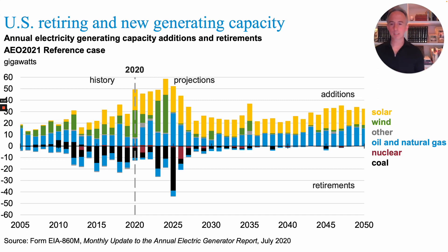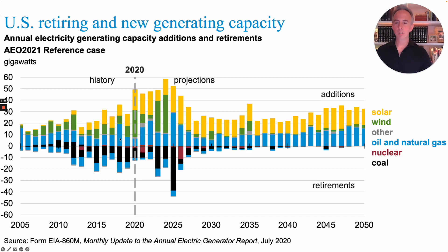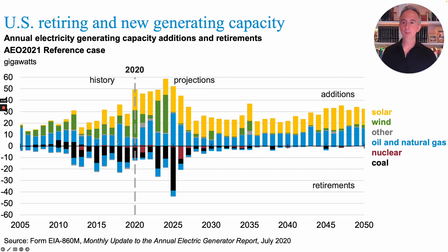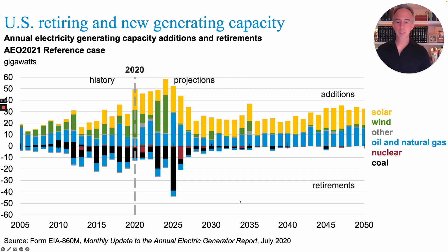Looking more recently at what kind of power sources are being built: leading up to 2020, mostly light blue natural gas power plants, green wind power, and yellow solar power above the line. Projections going forward show more of the same. Looking at what's being shut down — below the line in black — a lot of coal, with more coal expected to retire in the future along with some nuclear in red.